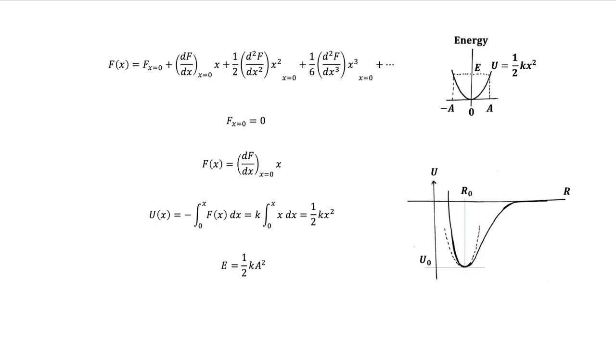The potential energy function U(x) that corresponds to Hooke's law can be found from calculating the work needed to displace a particle from X = 0 to X against this force. So we have U(x) = -∫[0 to X] F(x)dx, and this is equal to ½kx².